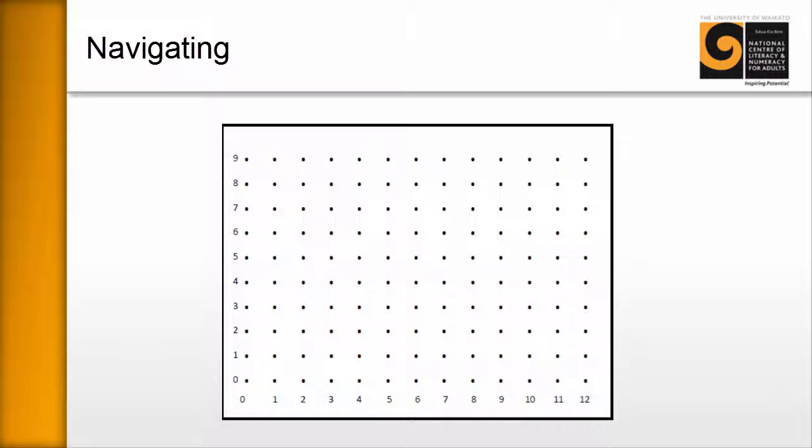Now another thing I like to use in classes are the coordinate sheets. What I do is I hand out a sheet like this to the class and I ask them, usually at random, to put two dots, to circle two of those dots somewhere, for example here and here. I like to tell them that this is how the navigation system works.